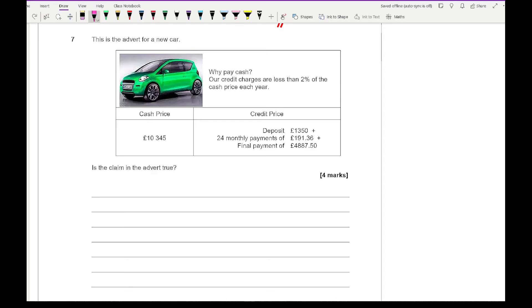Looking at method one, the first thing I want to do is work out the total credit price. The deposit is £1350, I need to add 24 payments of £191.36, and then I need to pay a final payment of £4887.50. If I do all of that on my calculator, 1350 plus bracket 24 times 191.36 plus 4887.5, I come up with the total price on credit of £10,830.14.